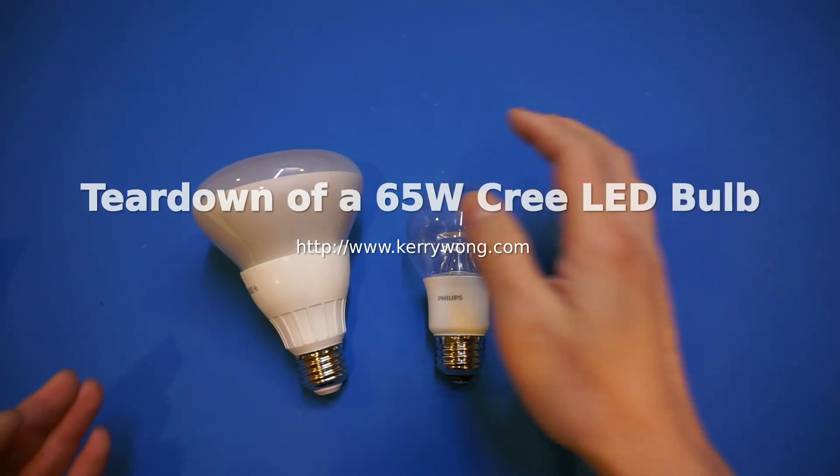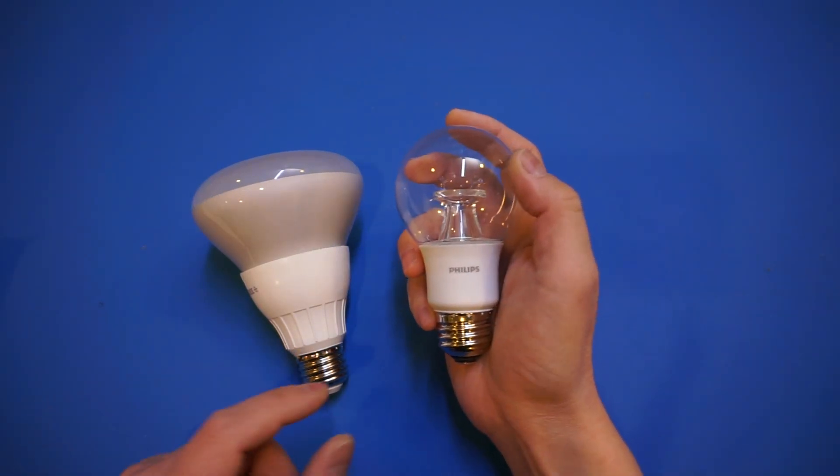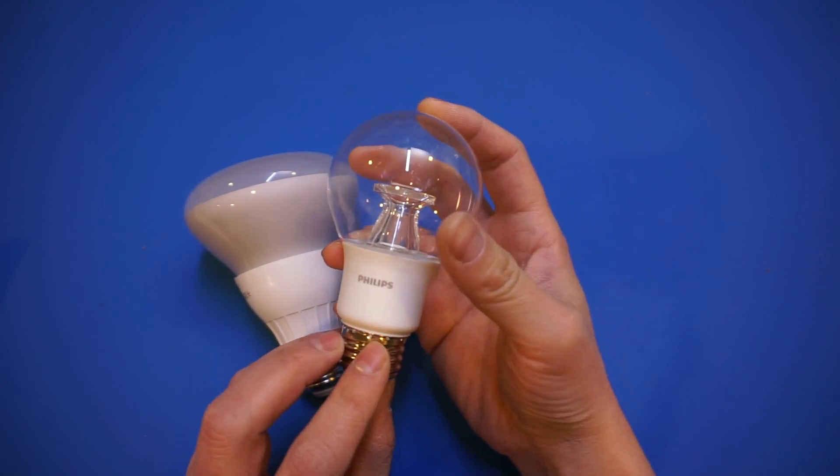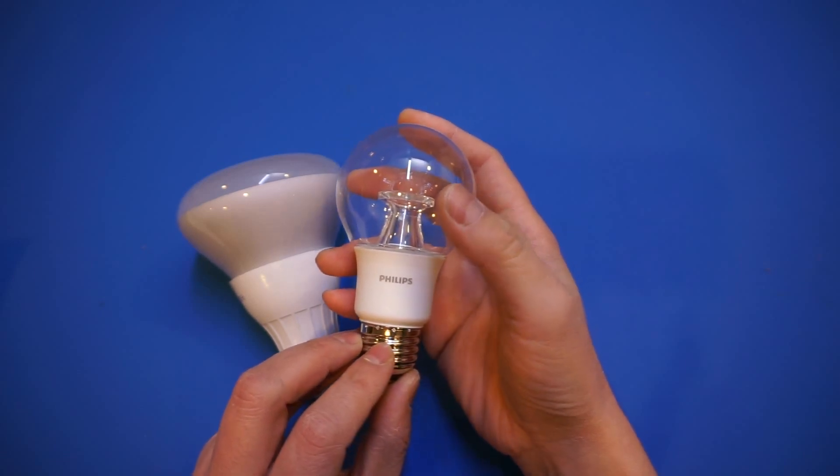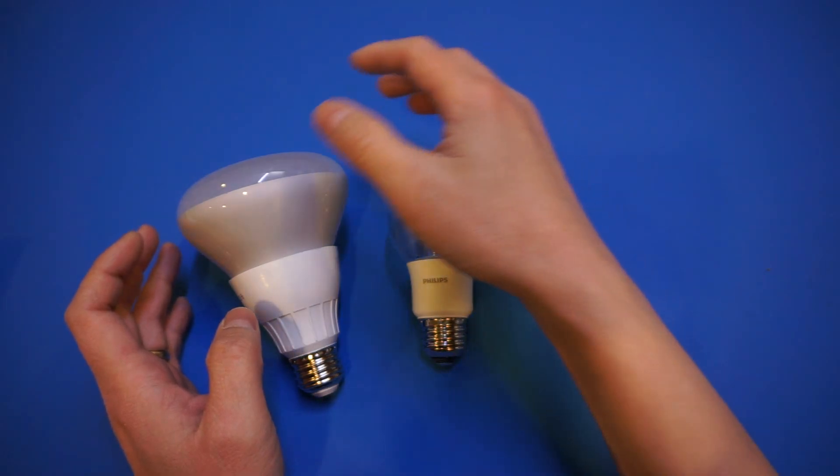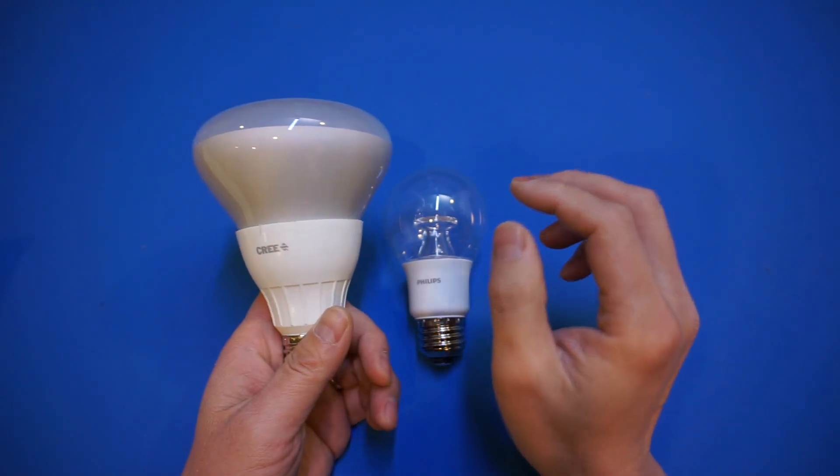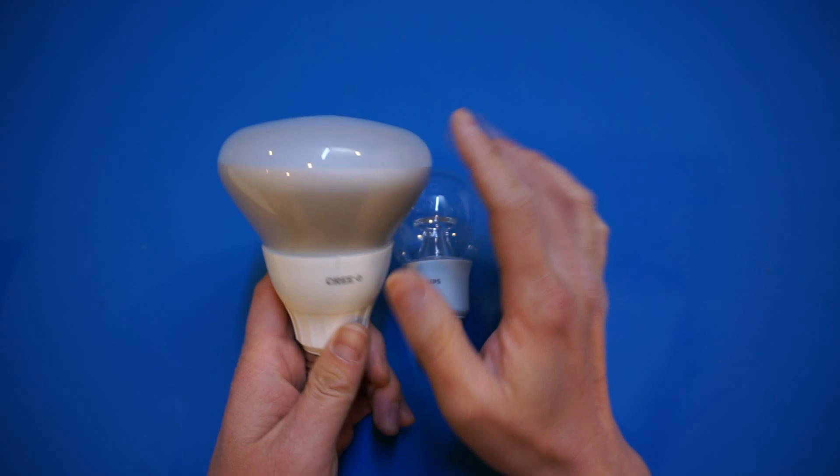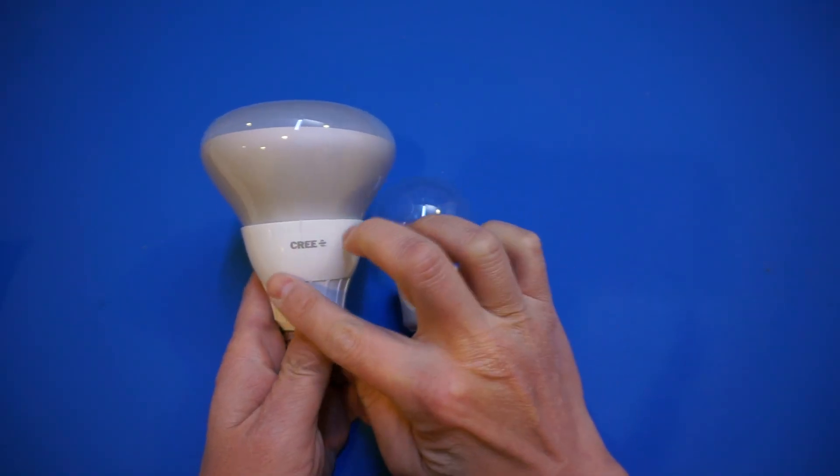A few months back, I did a teardown of a 60W Philips dimmable LED bulb and questioned the reliability of this particular model, as all six of these bulbs I installed had failed in just over a year of normal use. Well, the problem does not seem to be just limited to Philips LED bulbs, as recently a few of the LED bulbs in my living room started to fail as well. These LED bulbs were installed at roughly the same time as those failed Philips bulbs, but this time these are Cree LED bulbs.